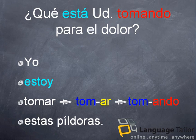Por ejemplo, TOMAR. Después, we are going to drop the ending — the AR. Then we are going to have TOM. And at the end, we will have to add ANDO. And then we will have TOMANDO.